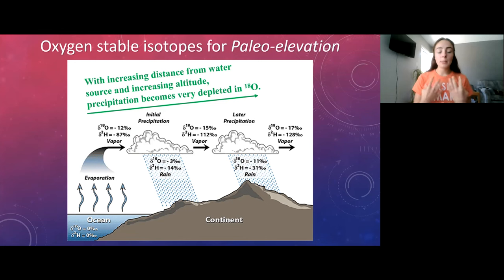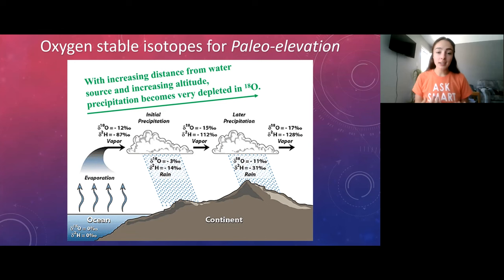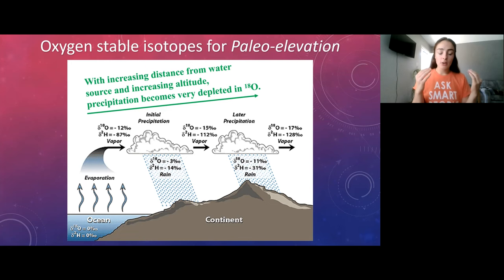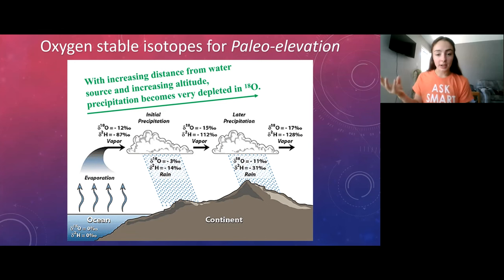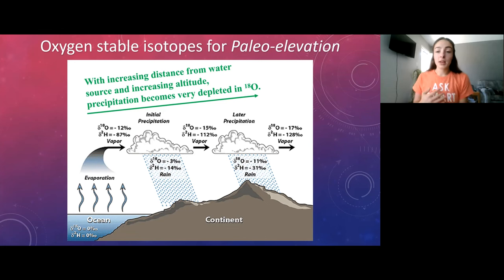We can also use stable oxygen isotopes as an elevation proxy. After evaporation from the ocean, clouds migrate in predictable weather patterns. As they move further from the water source and higher in altitude, they precipitate out their heavy isotopes. By the time clouds get over a mountain chain, they're so depleted in oxygen-18 that signatures at that altitude are super light — far more oxygen-16 than oxygen-18.